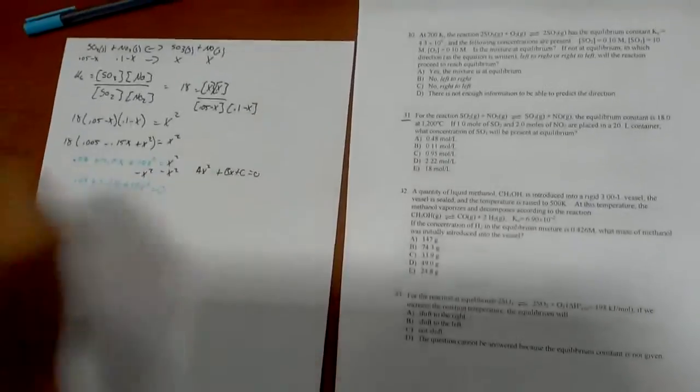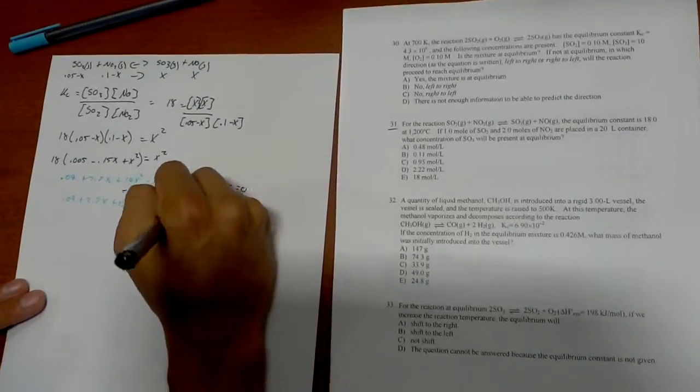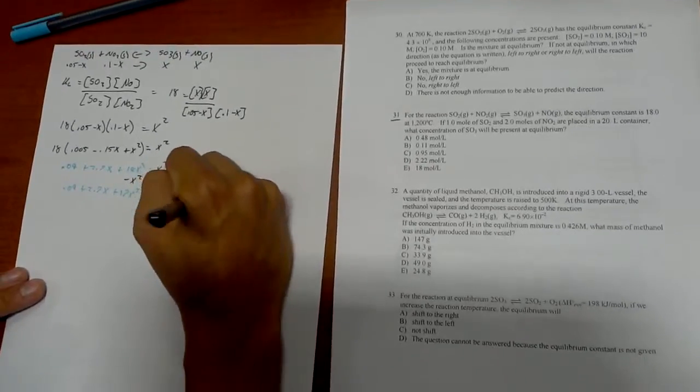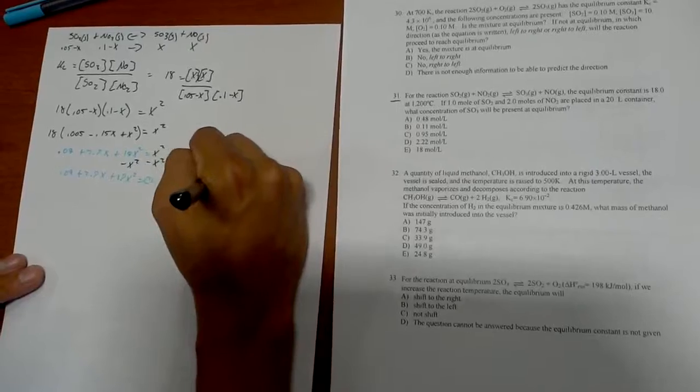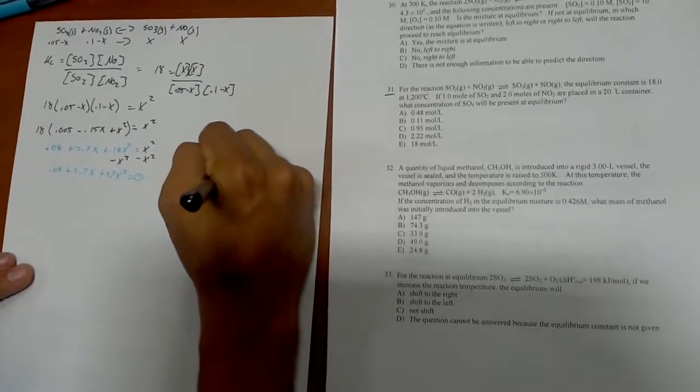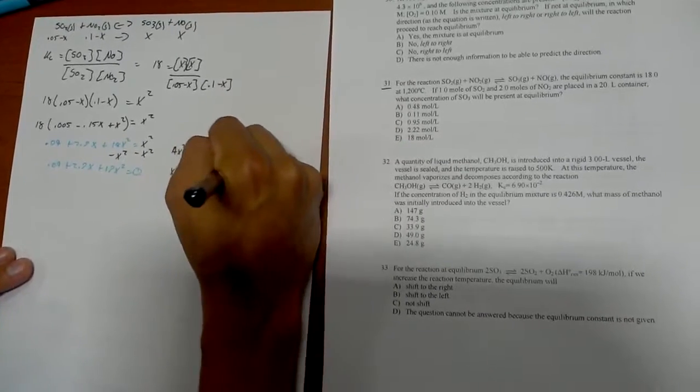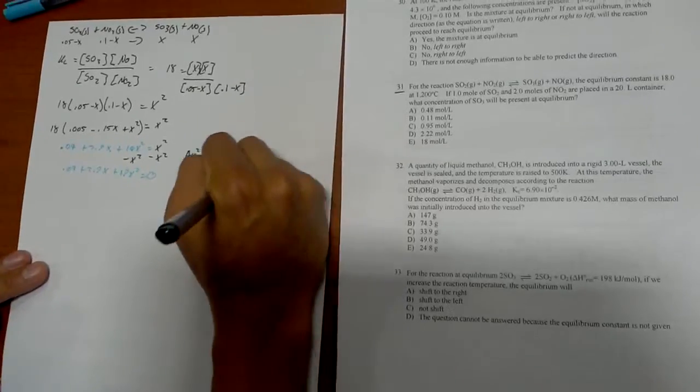And our quadratic formula is x equals negative b plus or minus the square root of b squared minus 4ac over 2a.